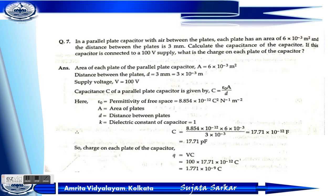Problem 7: In a parallel plate capacitor with air between the plates, each plate has an area of 6×10⁻³ m² and the distance between the plates is 3 millimeters. Calculate the capacitance. If connected to a 100 volt supply, what is the charge on each plate? Using C = ε₀A/d, we get C = 17.71 picofarad. Charge Q = C×V = 1.771×10⁻⁹ coulomb.